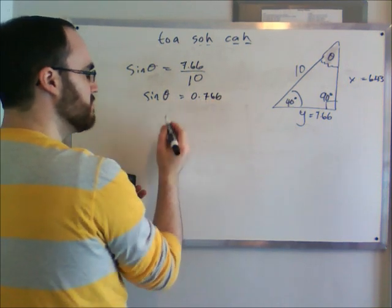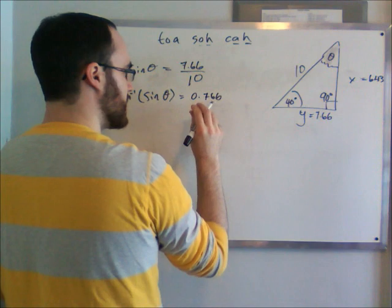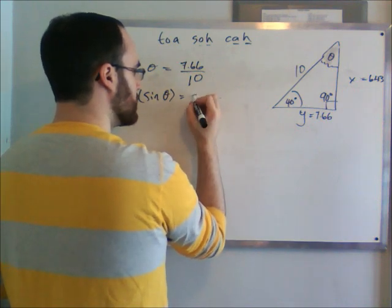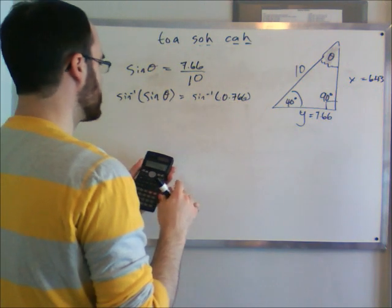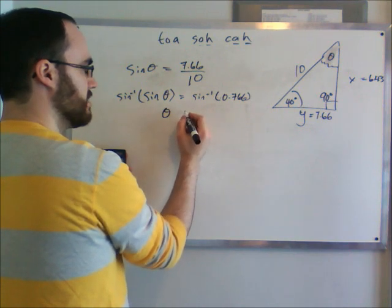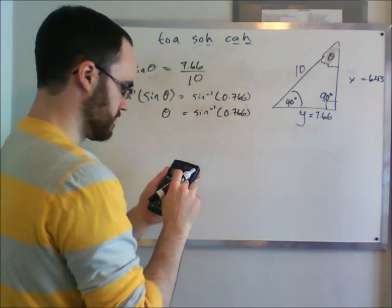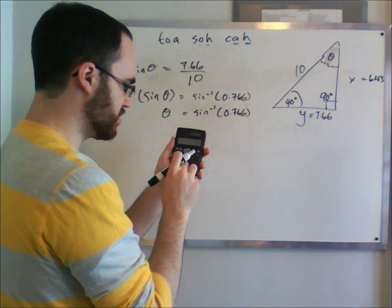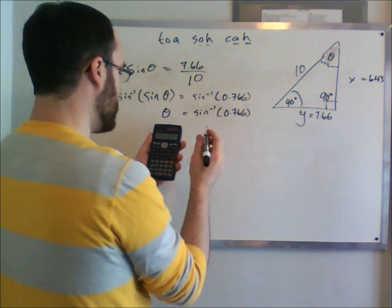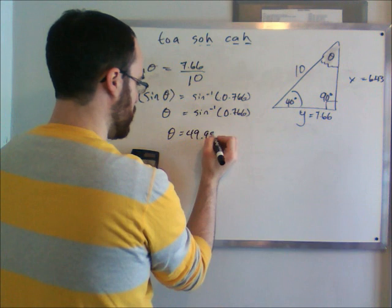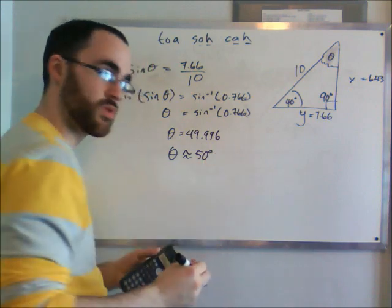And to get the opposite of this, we need to do inverse sine of both sides. So sine inverse and sine cancel each other to become theta equals sine inverse of 0.766. So I just go, on my calculator it's shift sine 0.766, which gives me 49.996. So theta is basically equal to 50 degrees, which is what we've found out from before.